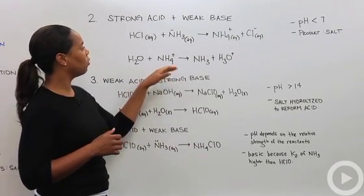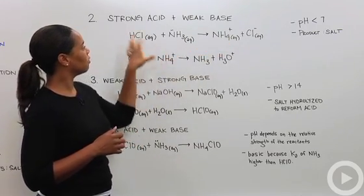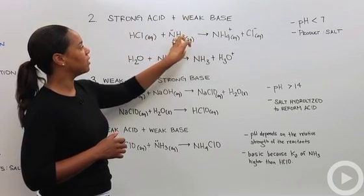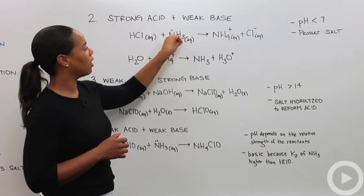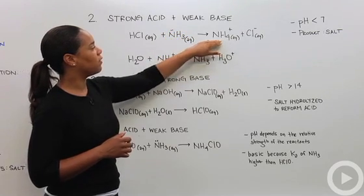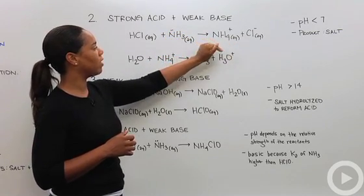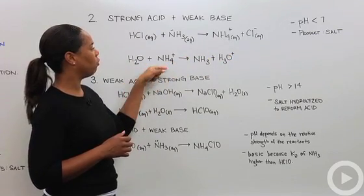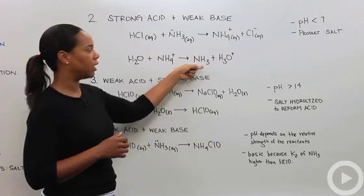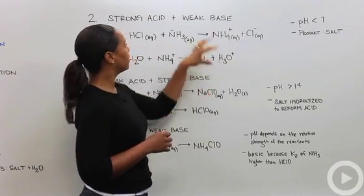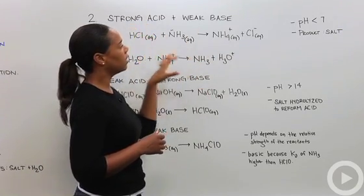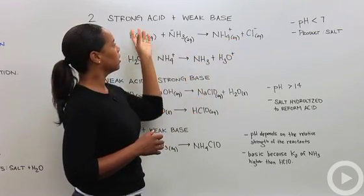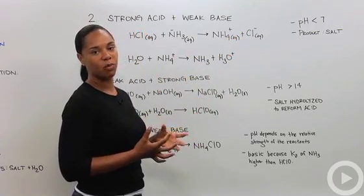This reaction goes further because the strong acid completely dissociates, but the weak base means some ammonia (NH3) and some NH4Cl remain. The ammonium ion can then react with water to recreate the weak base ammonia. Since the strong acid dominates, your pH is going to be less than 7 — your solution will still be fairly acidic.